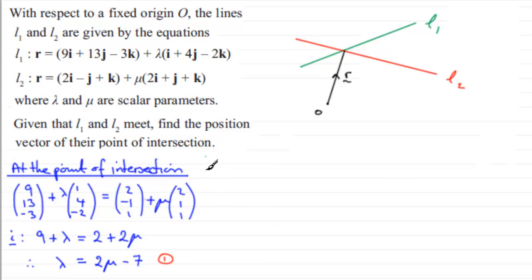Now what I want to do next is look towards another equation, and I'm going to look at the j components. That's the second line here, and equate those. So we'll just put j there as a subtitle. And what we've got is 13 plus 4 lambda is going to equal -1 plus mu. And what I can do now is make mu the subject here. So if I was to add 1 to both sides, I'm going to have mu equals 14 plus 4 lambda. And I'll call that equation 2.